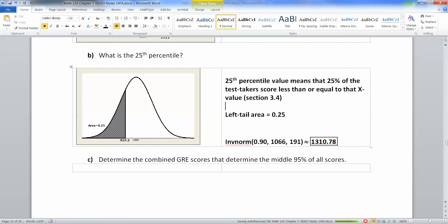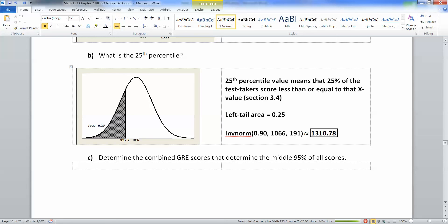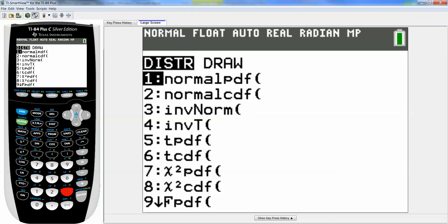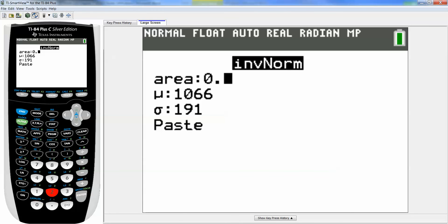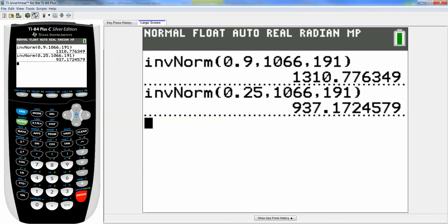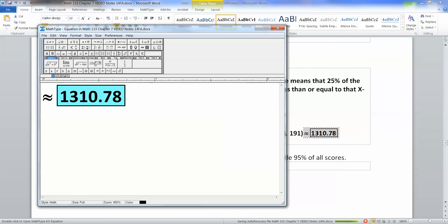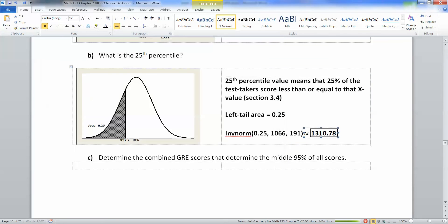So I know the left tail area is 0.25. So I'm going to take inverse norm 0.25, 1066, 191. So second distribution, number three, inverse norm. I'm going to take 0.25. And again, 1066 and 191 haven't changed. That gives me 937.17.